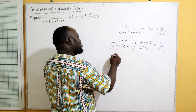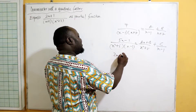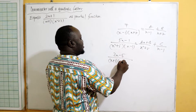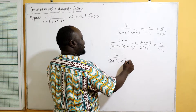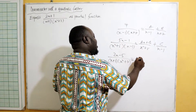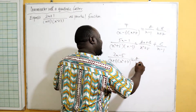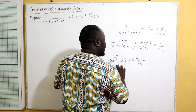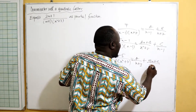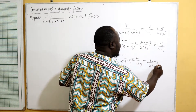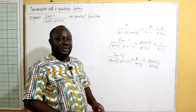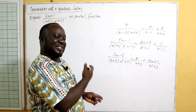Similarly, for 2x minus five over x plus three times x squared plus seven: since the linear factor comes first, you write a over x plus three, then plus bx plus c over x squared plus seven. Then you solve it — very simple, just like the way we solved the first one.